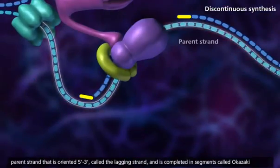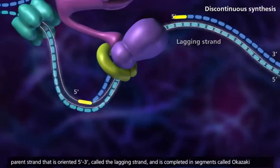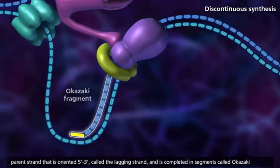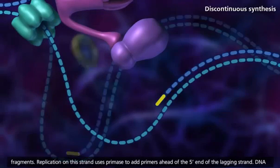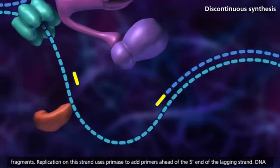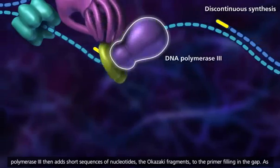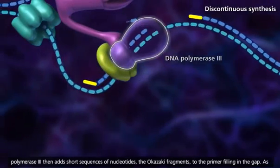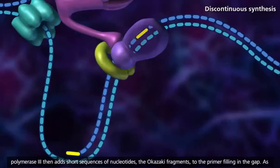Discontinuous synthesis occurs on the parent strand that is oriented 5' to 3' called the lagging strand, and is completed in segments called Okazaki fragments. Replication on this strand uses primase to add primers ahead of the 5' end of the lagging strand. DNA polymerase 3 then adds short sequences of nucleotides, the Okazaki fragments, to the primer filling in the gap.